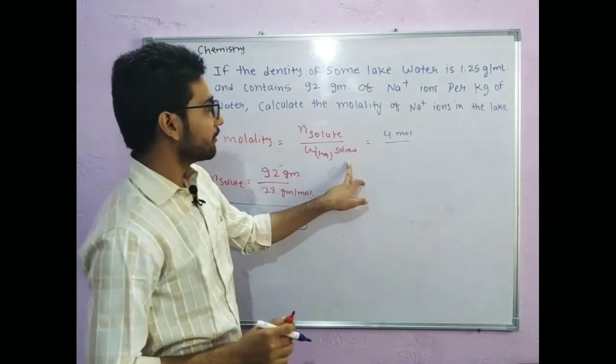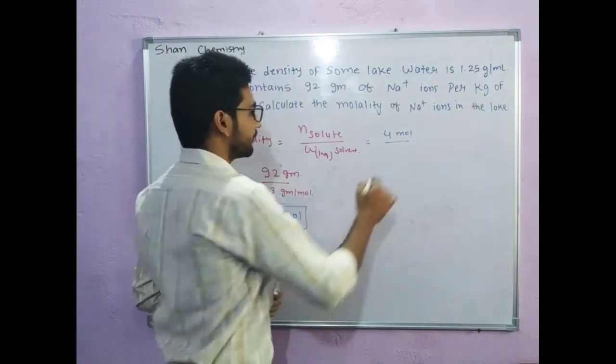What is the volume of solute? So then you have to calculate per kg. Per kg means 1 kg.